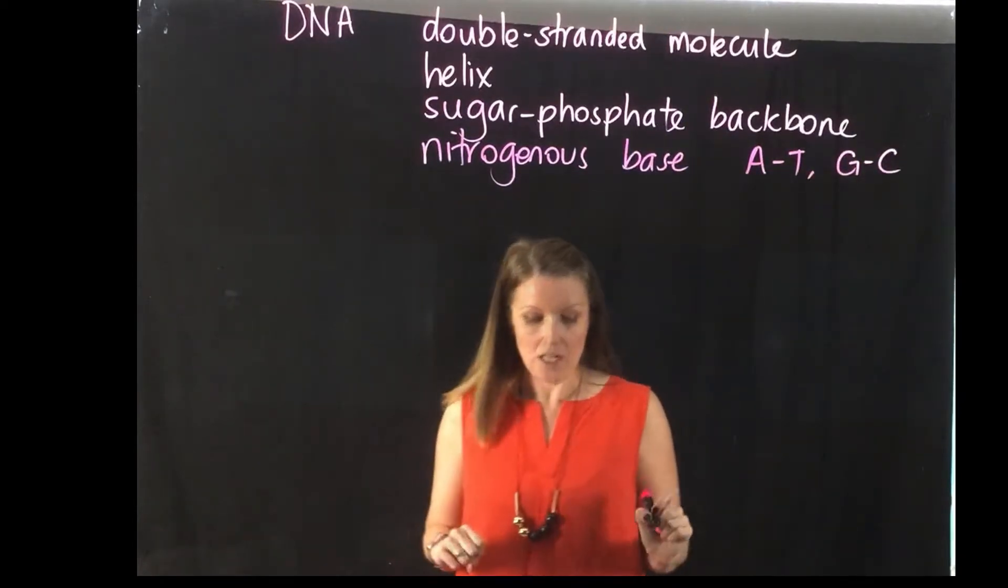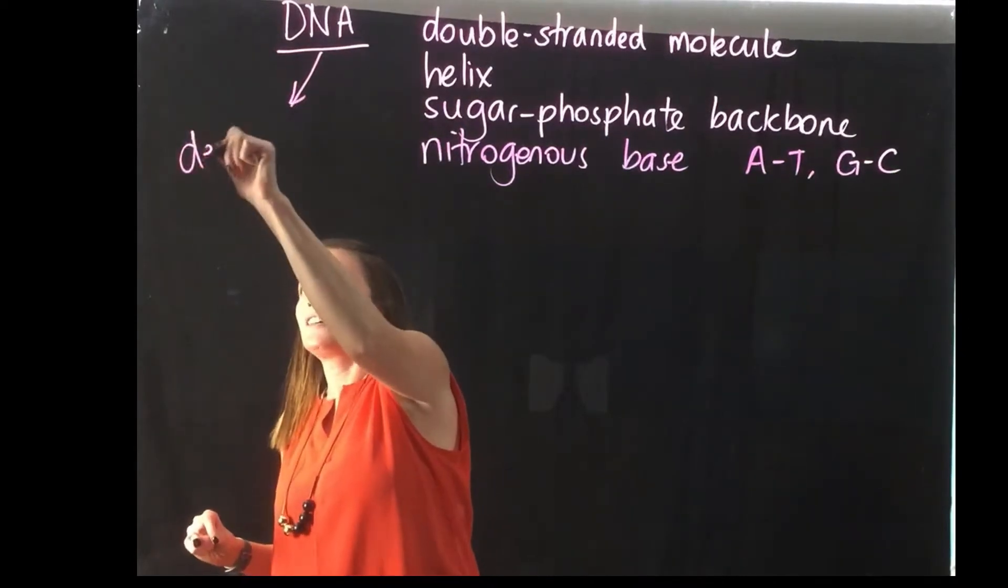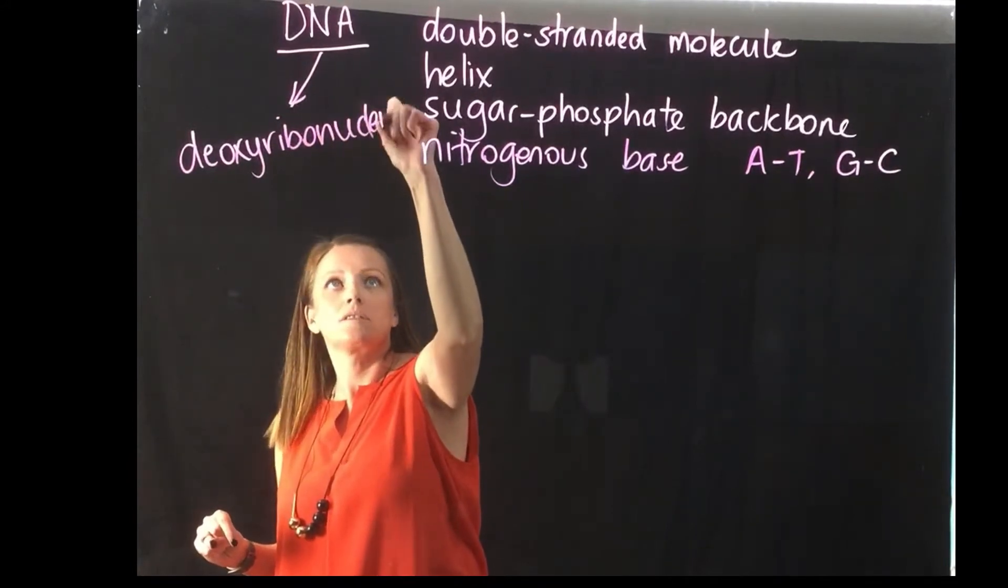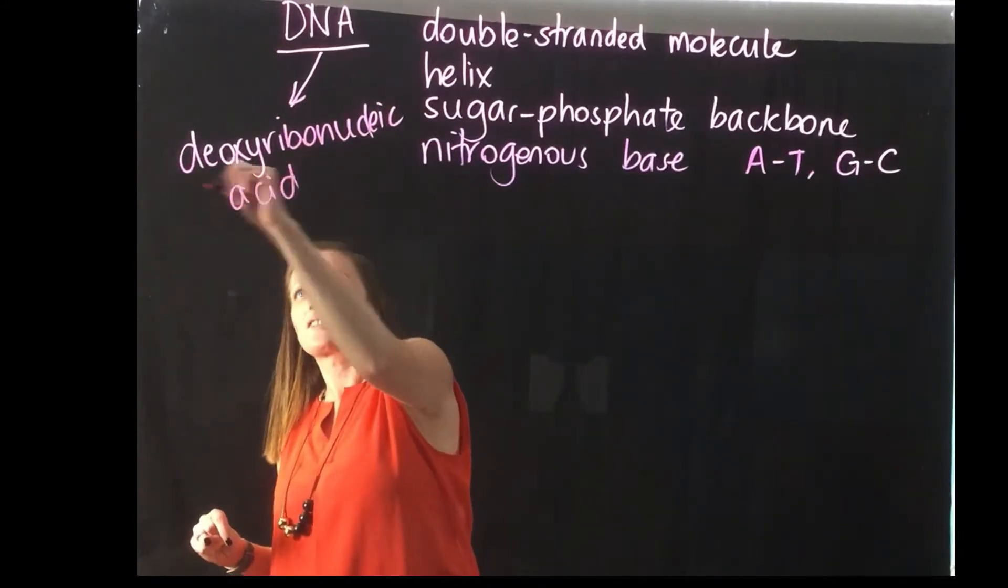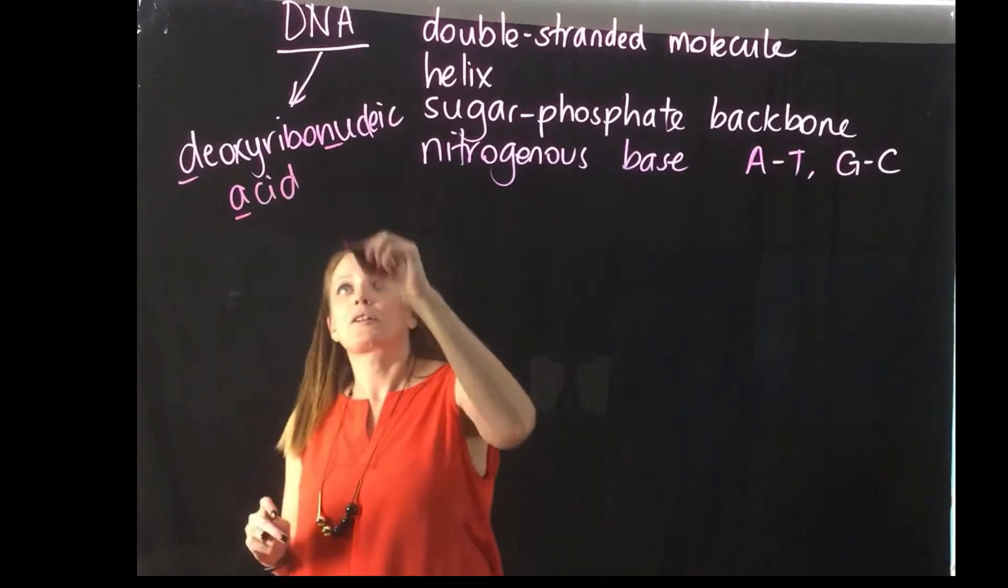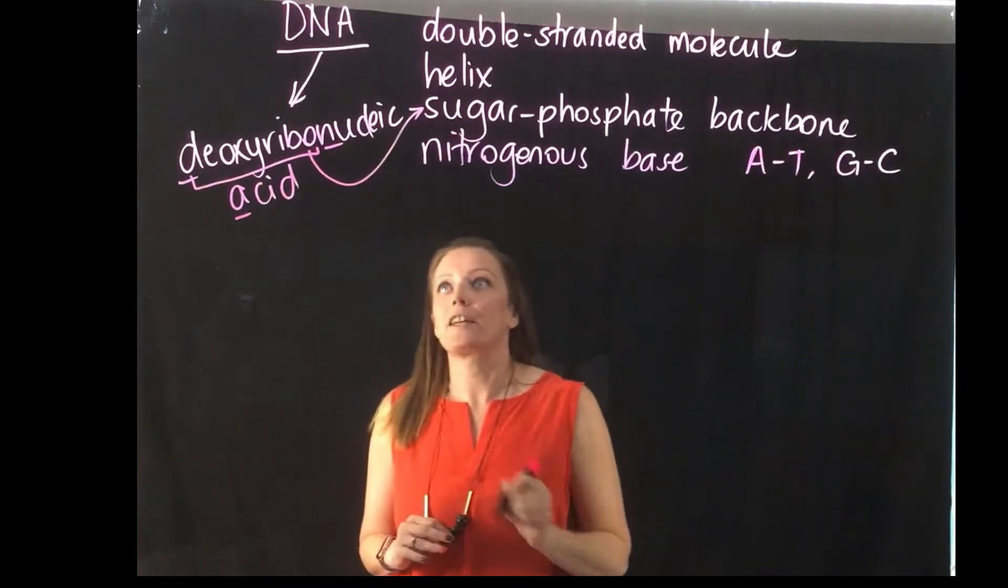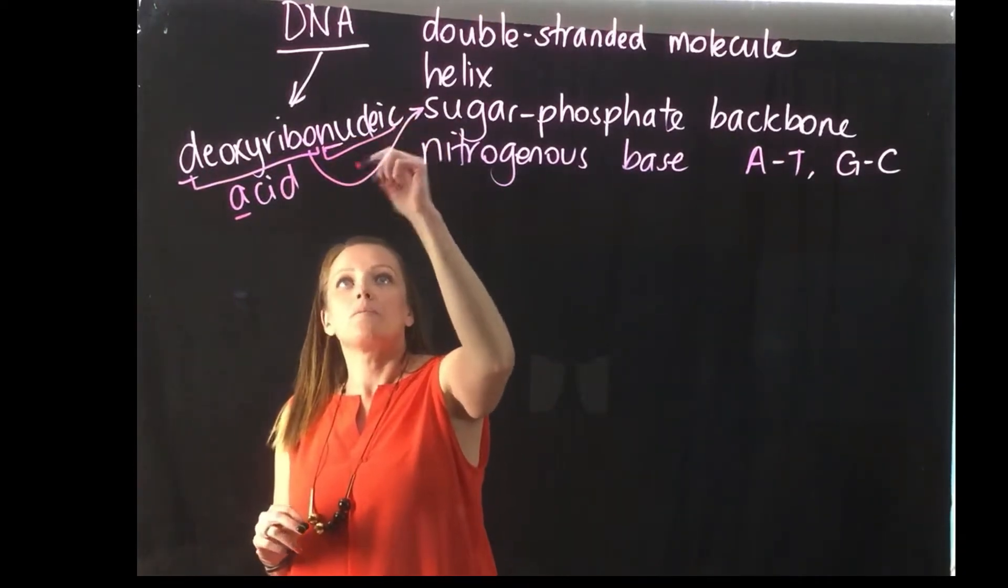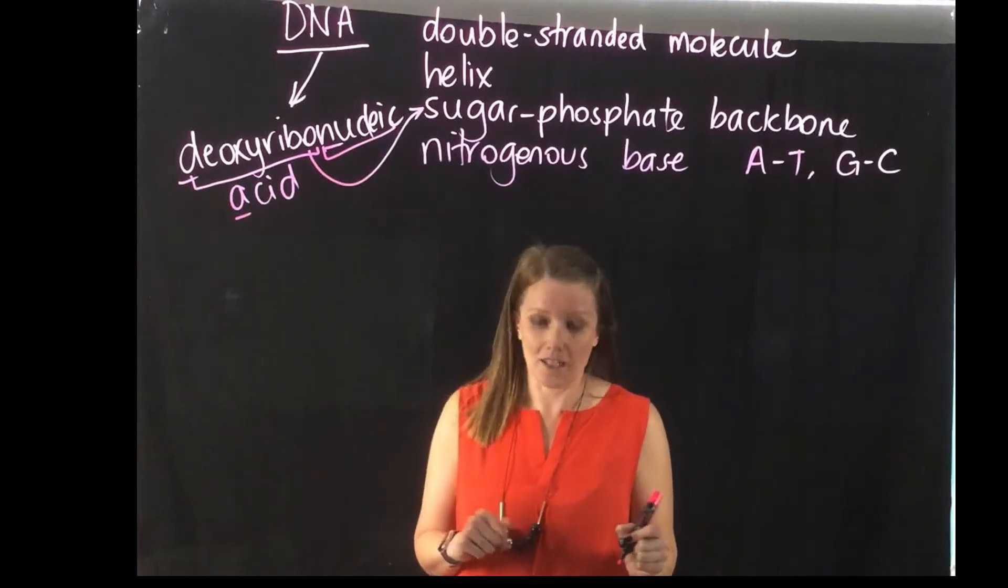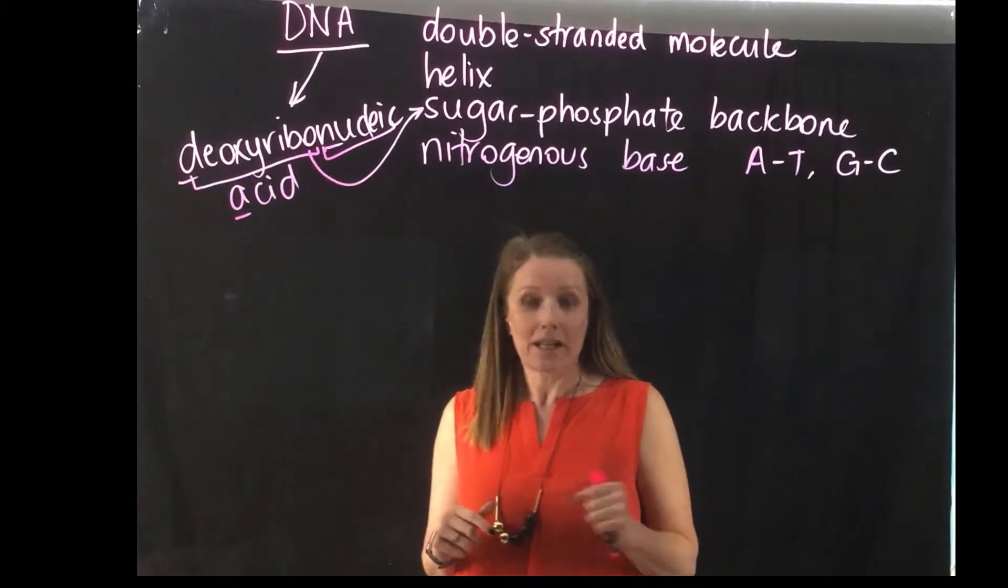So as we know, DNA is deoxyribonucleic acid, so the D, N, and A. The deoxyribo refers to the sugar that is found there. Nucleic is because it's found in the nucleus, and then acid is because of the different chemicals that it is made up of.